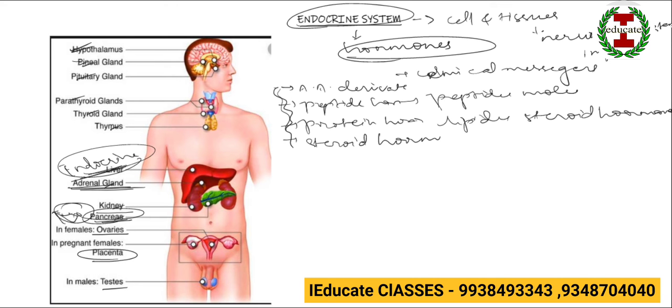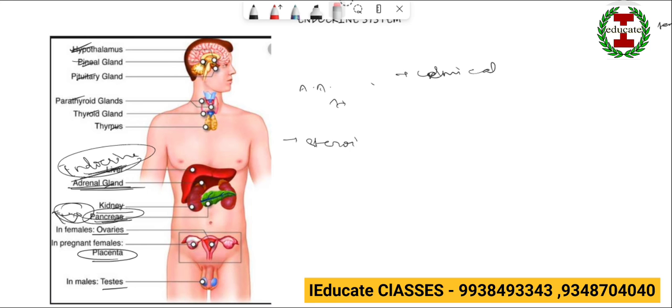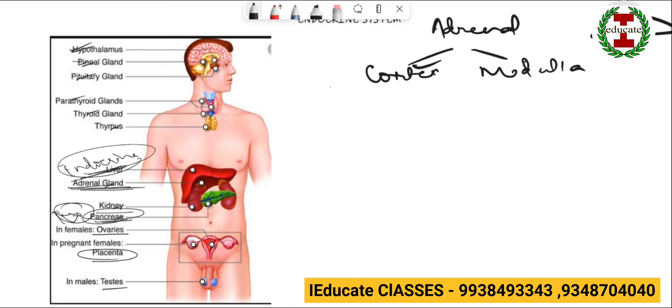Now moving on to the adrenal gland. The adrenal gland has got two parts. One is the adrenal cortex, the other one is the adrenal medulla. It is basically a pyramidal structure gland present above the kidney. The outer part is known as the cortex whereas the inner part is known as the medullary part. So there are various hormones secreted from the adrenal cortex and the adrenal medulla.